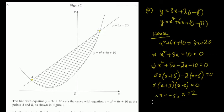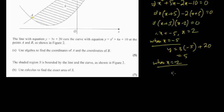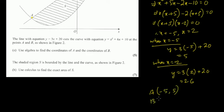Therefore x equals minus 5 or x equals 2. The sum is not done because we have to find the coordinates — both x and y. When x equals minus 5, put into the easier equation: y equals 3 times minus 5 plus 20, which is minus 15 plus 20 equals 5. When x equals 2, y equals 3 times 2 plus 20 equals 26. So A is (minus 5, 5) and B is (2, 26).